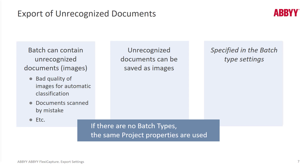There's also the issue of unrecognized documents. At the batch type level, there's an export tab where you can set up a path for exporting unknown documents. If you don't configure that and your batch has unknown documents, that batch will flow to your exception folder.